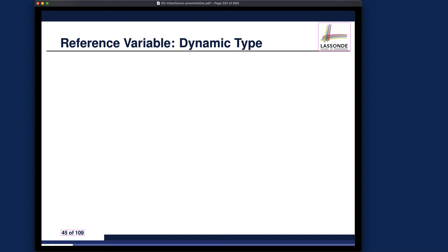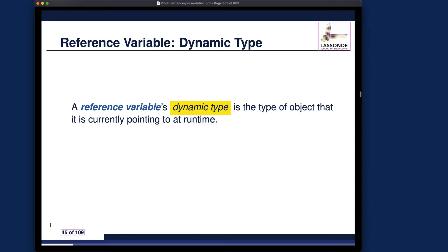We just learned about the substitution rules for variable assignments, specifically reference variables. Let's see what can actually happen at runtime in terms of the change on dynamic types for the variable. For a reference variable, the dynamic type is simply the type of the object that it is currently pointing to at runtime. Every reference variable stores the address of some object, so the object type is the dynamic type.